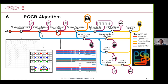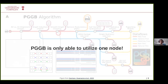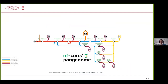However, PGGB comes with the caveat that it is currently a batch script with one large Docker container, only able to utilize one node at a time — so it's hard to scale up. That's why I decided to implement the NFCore pangenome pipeline, whose core workflow directly mirrors the PGGB workflow, but with new features to make it faster and more scalable across a cluster.